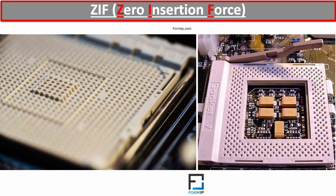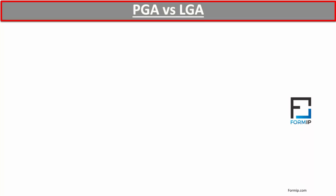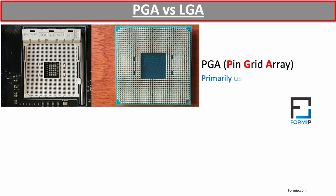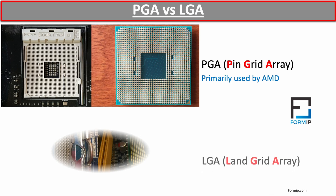One of the most common CPU sockets is the ZIF — zero insertion force — format. It is a type of socket where the CPU is installed without force; it falls naturally into the socket. This allows the CPU to be placed and replaced without the need to solder. There are different types of sockets in ZIF format. One of the most common is the PGA, pin grid array, which is primarily used by AMD. The PGA slot is square-shaped, with holes and a locking lever.